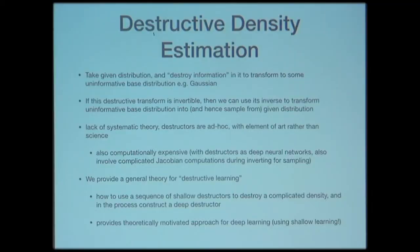Imagine you only have a not-so-good destructor — a shallow destructor, like a shallow density estimation procedure. It won't be good enough to directly transform the data to a Gaussian, but it can destroy some information. So use this shallow destructor to destroy some information, and after applying it, the amount of information is reduced. Apply another shallow destructor, destroy a little more information, and keep going. A composition of these shallow destructors together results in a nice deep destructor that destroys a lot of information. This is easier to analyze and easier to implement.